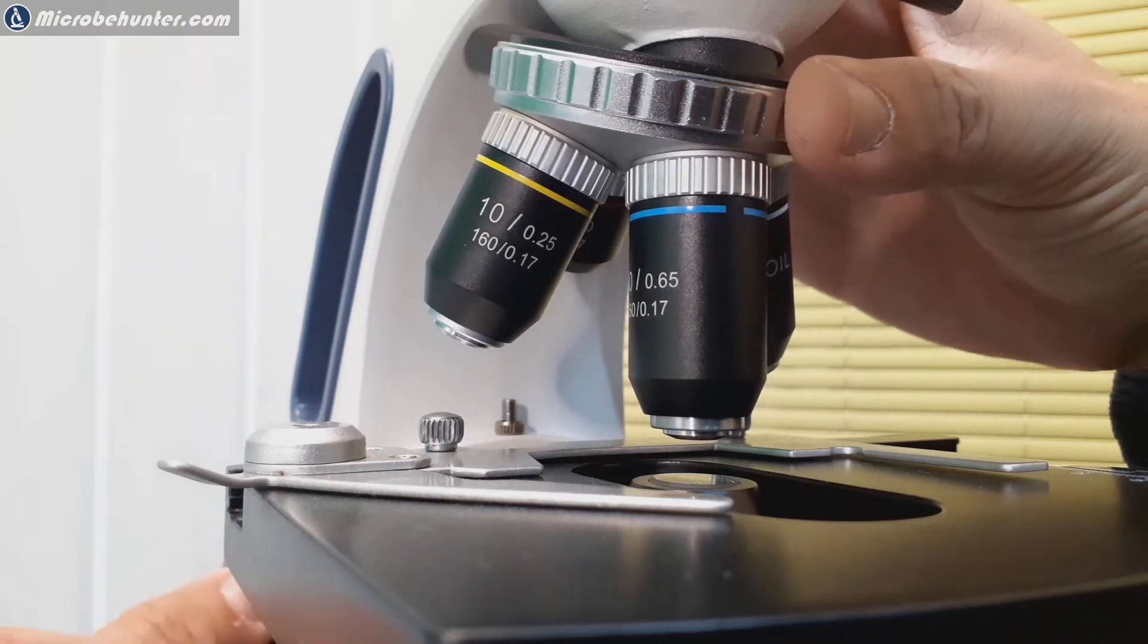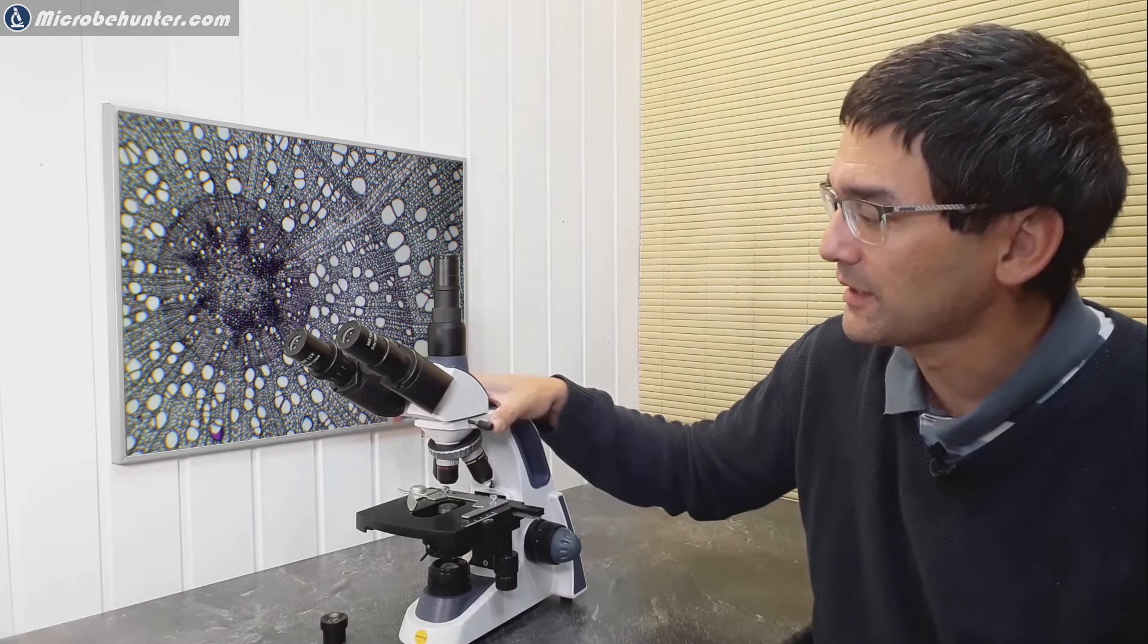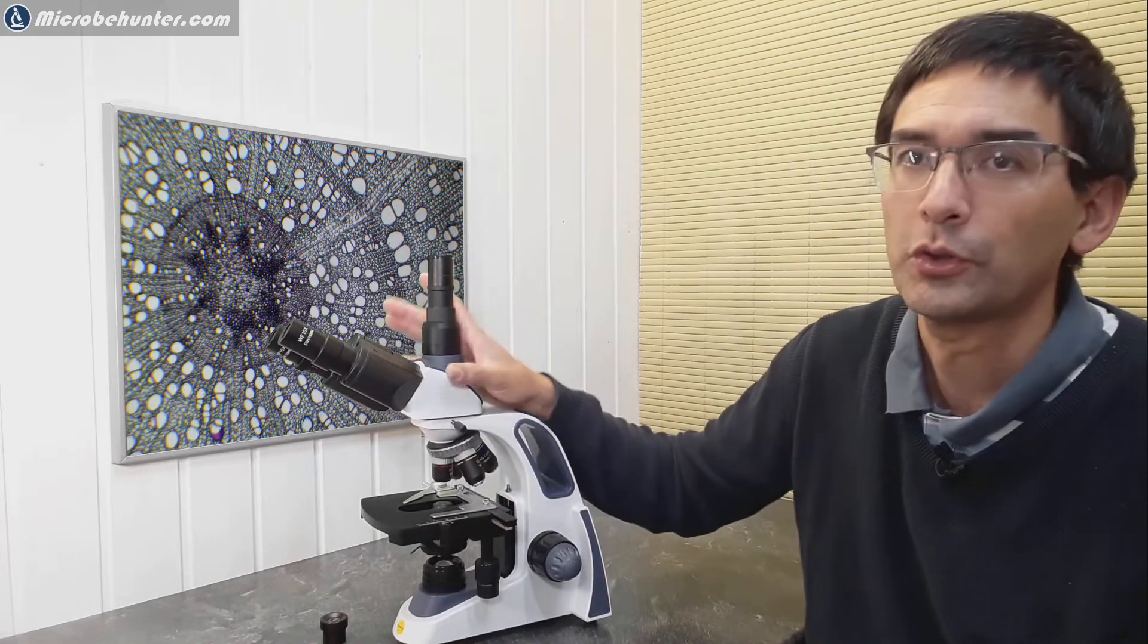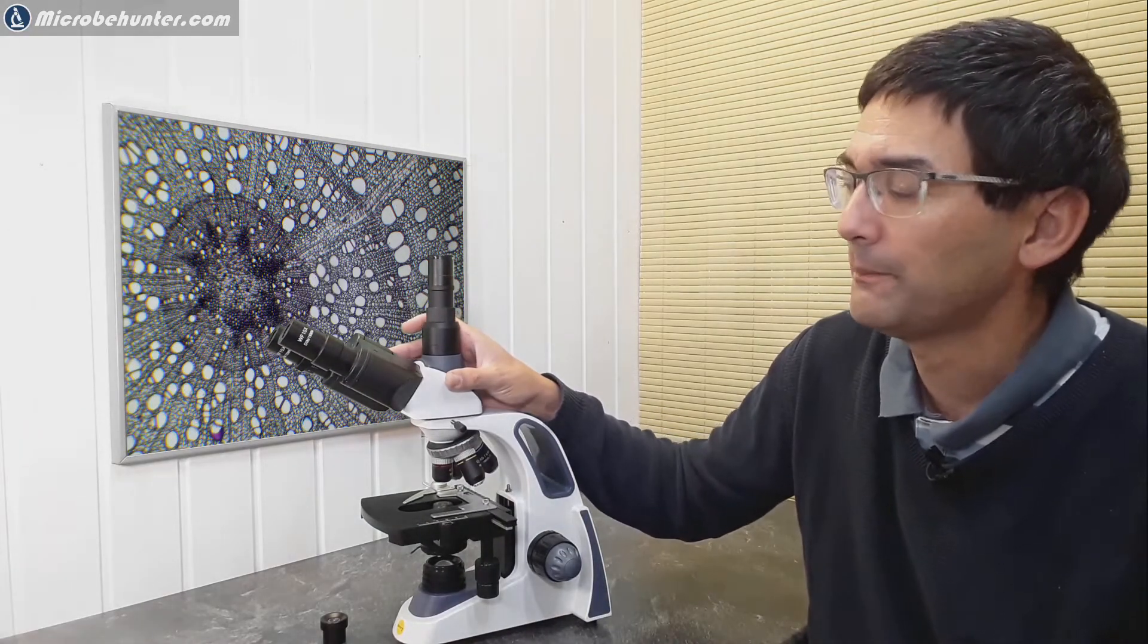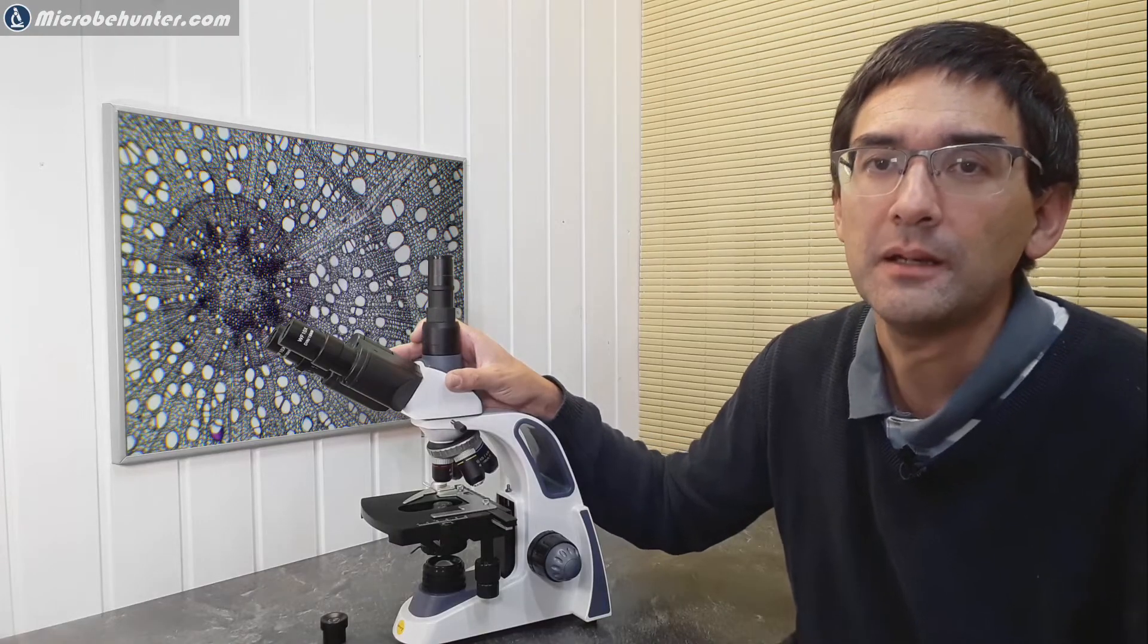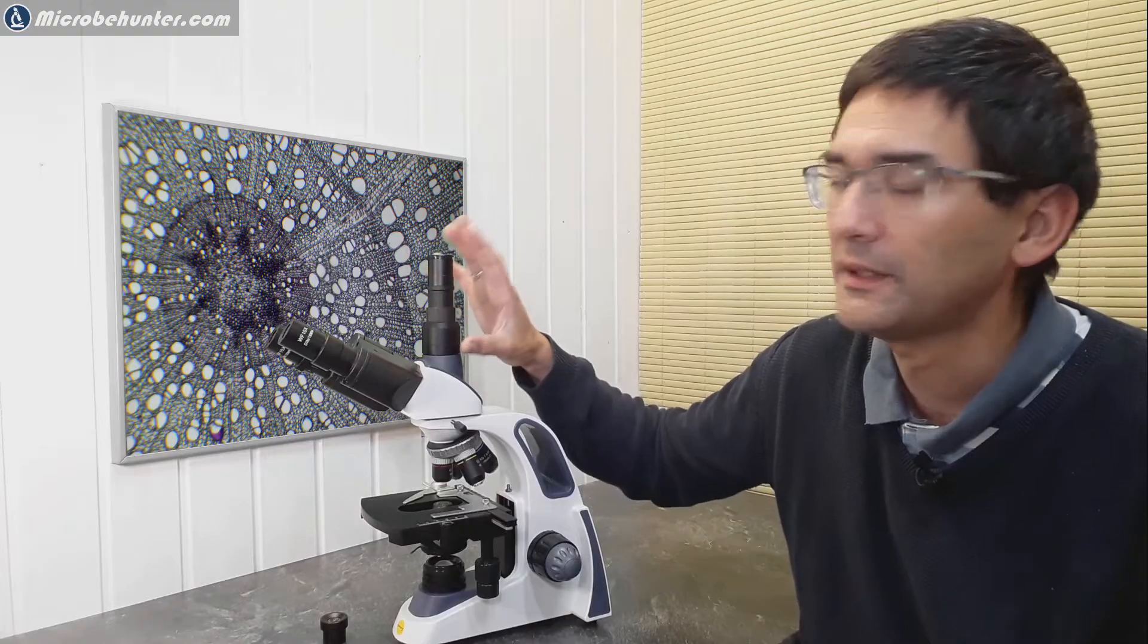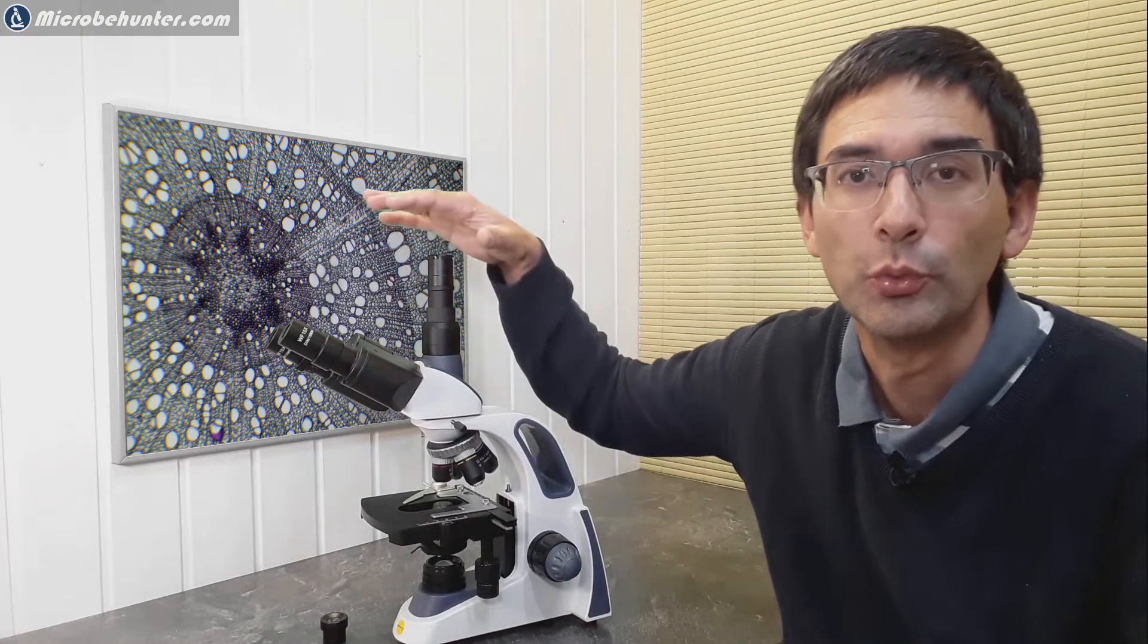What I've got here is the trinocular version of the microscope. The 380B is the binocular version, but I would actually recommend that you get the trinocular version - it's simply so much more convenient to connect the camera.